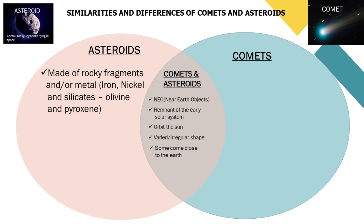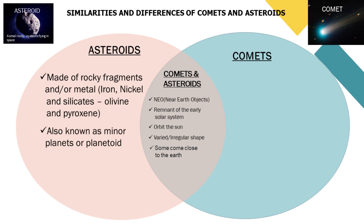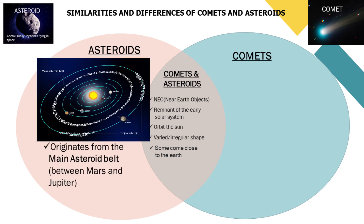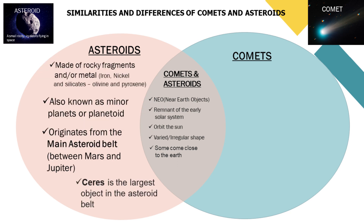Asteroids are made of rocky fragments and minerals such as iron, nickel, and silicates, which are composed of olivine and pyroxene. Asteroids are also known as minor planets or planetoids. They come from the main asteroid belt which lies between Mars and Jupiter. Ceres, the first asteroid discovered, was originally considered to be a new planet, and is currently the largest object in the asteroid belt.